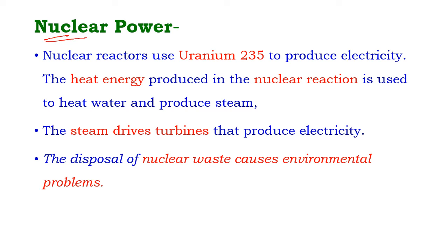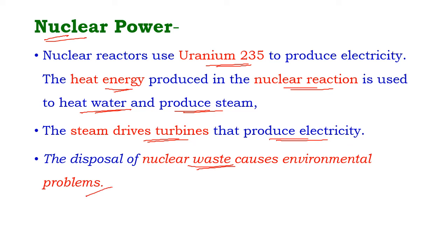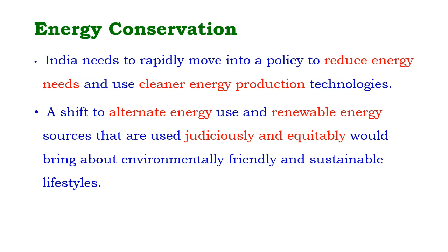Nuclear power. Nuclear reactors use uranium-235 to produce electricity. The heat energy produced in the nuclear reaction is used to heat water and produce steam. The steam drives turbines, which are used to produce electricity. The disposal of nuclear waste causes very serious environmental problems, and hence nuclear waste must be disposed of very cautiously.